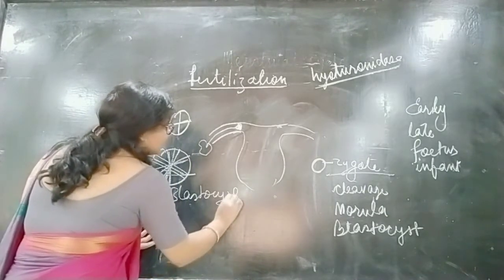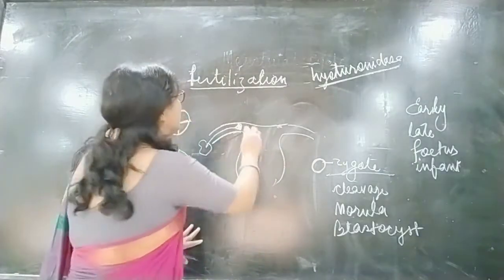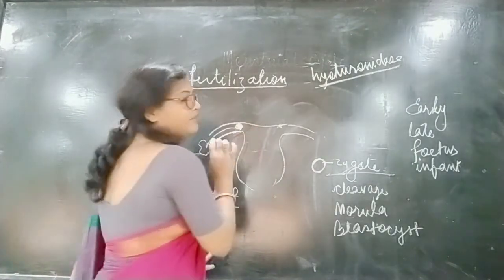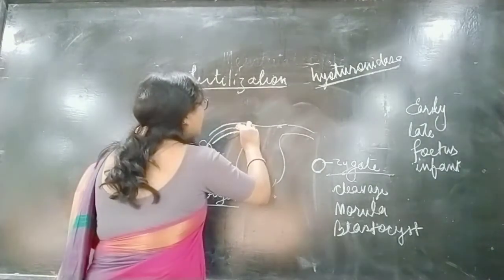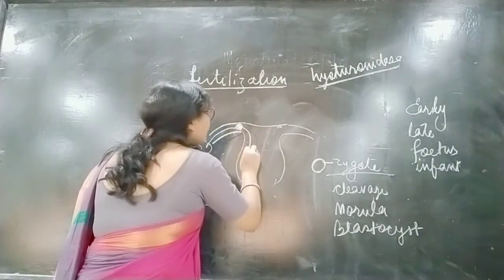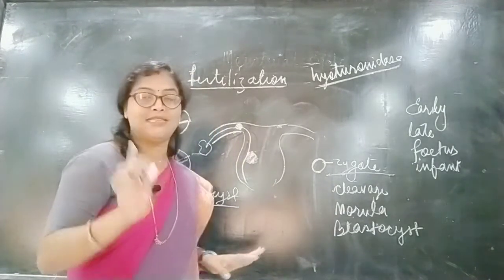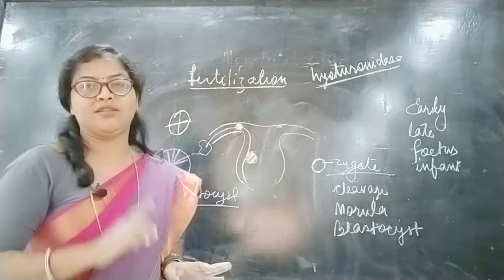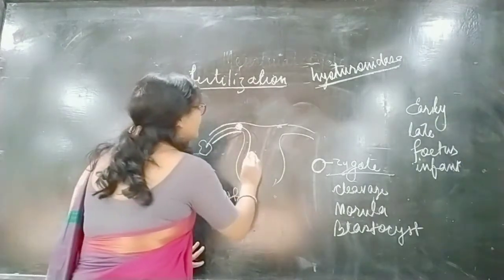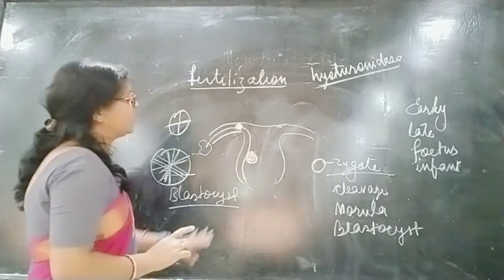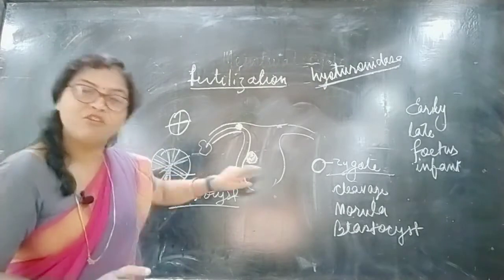When it is divided into 32 cells, this phase is called blastocyst. It is during the blastocyst phase that the zygote travels and fixes itself into the uterine wall. This process is called implantation. Implantation is done during the blastocyst phase.